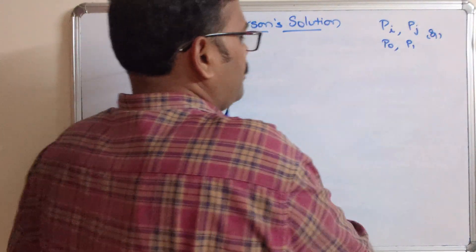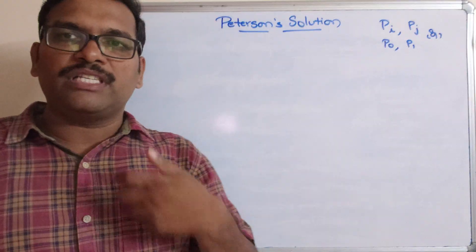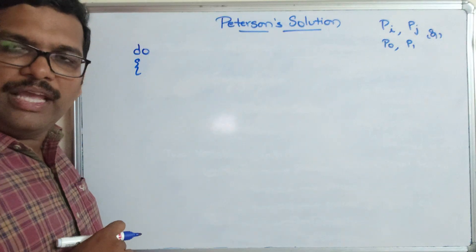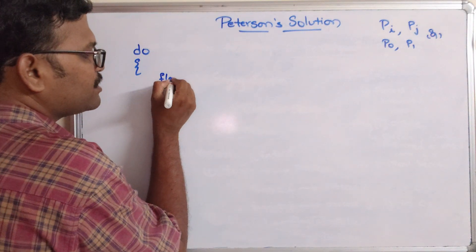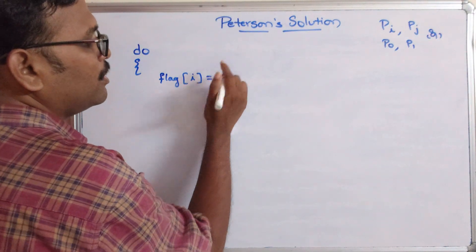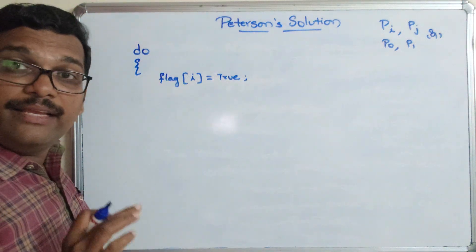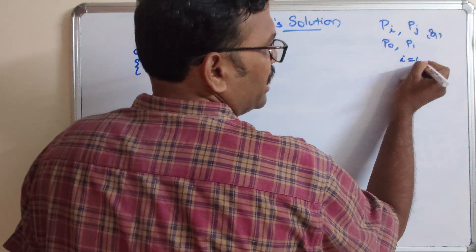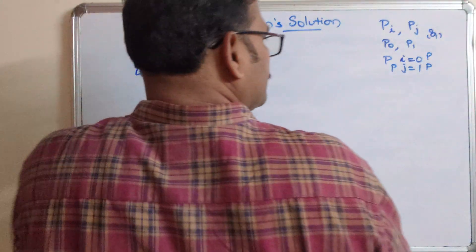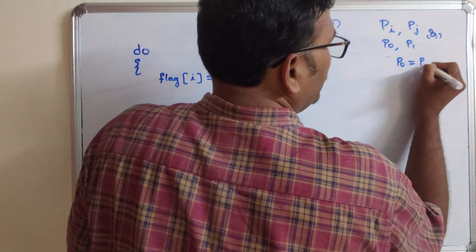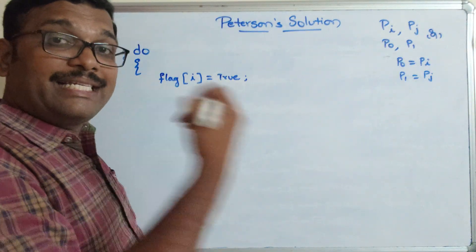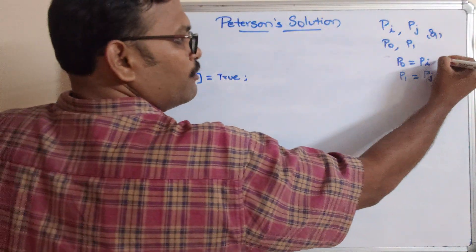This is a never-ending process, so every time some process will keep executing. We will write the code in an infinite loop. So: do — first, flag[I] = true, meaning process I is showing interest to enter into the critical section. Then turn = J, meaning if process J is already in the critical section, process I has to wait until process J completes its execution.